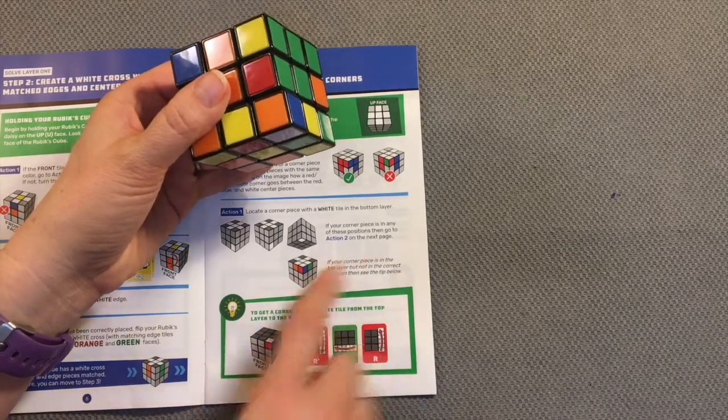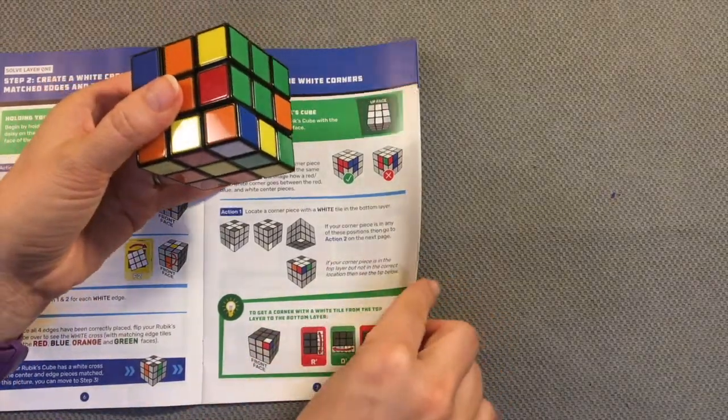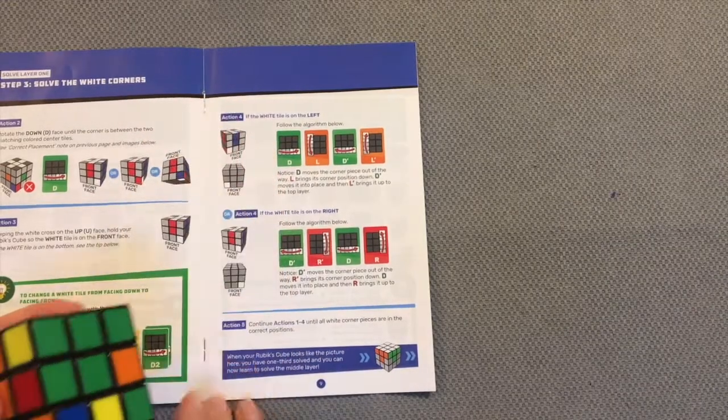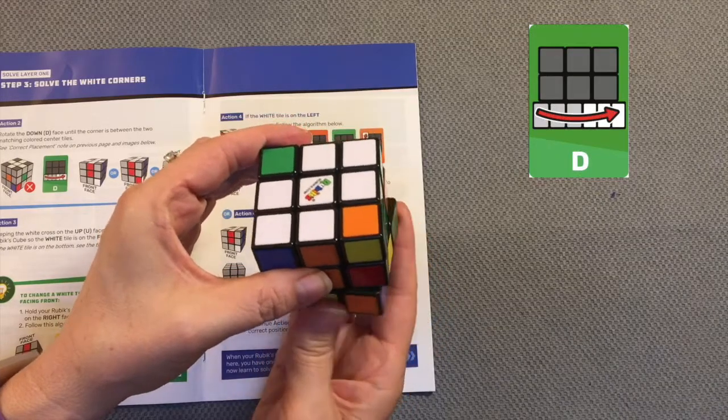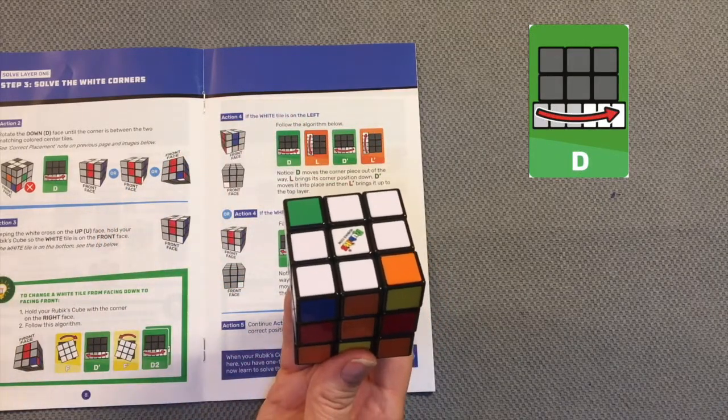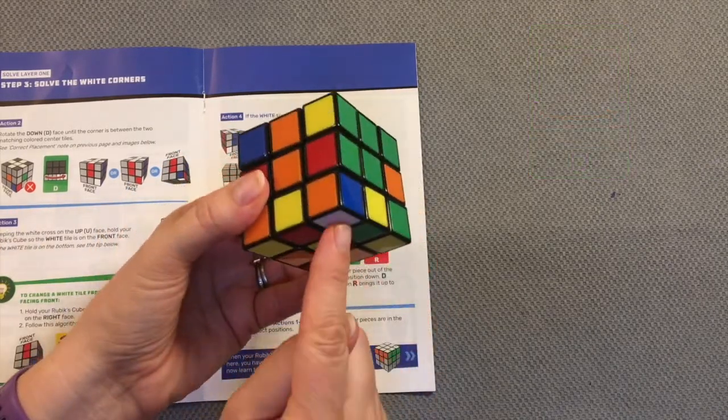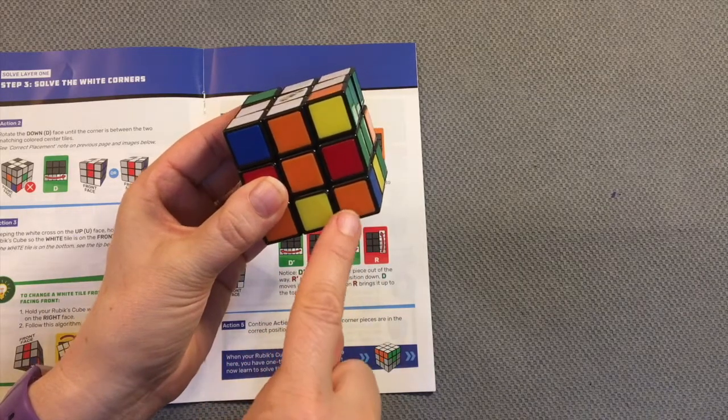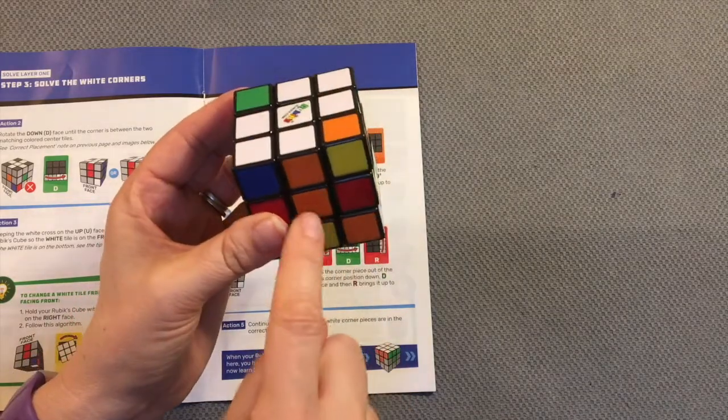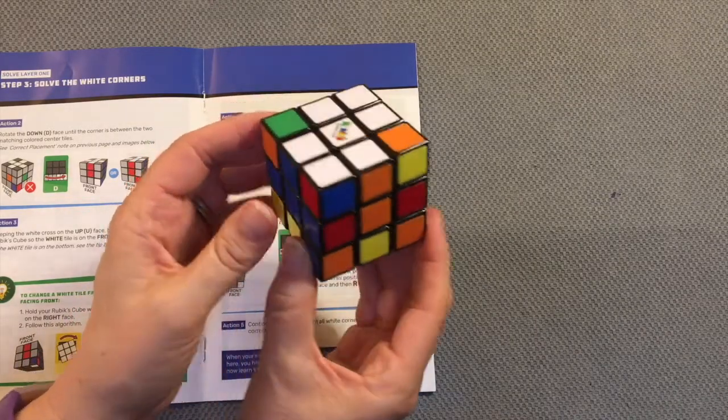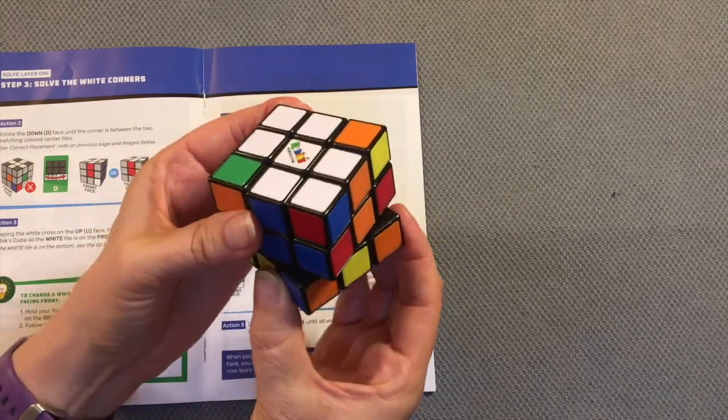Here I am for action 2. Rotate the down face, which is this face, until the corner is between the two matching colored center tiles. So I am looking for a corner between the orange face and the blue face. And I notice here I already have the orange face here, and here is my blue face. So I simply rotate the down face once to the left.